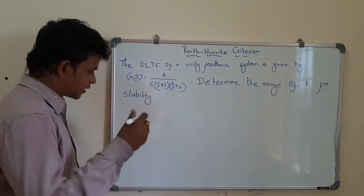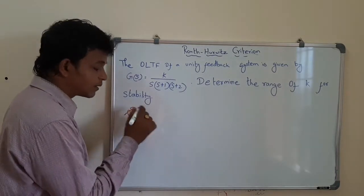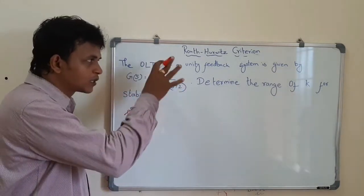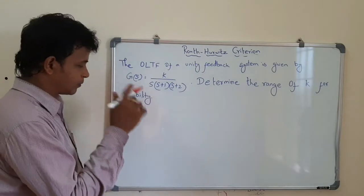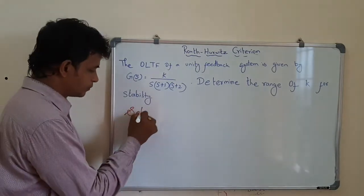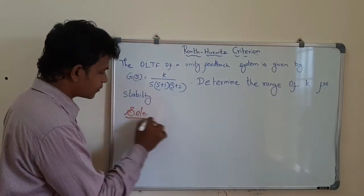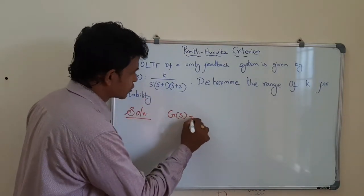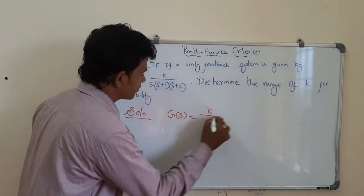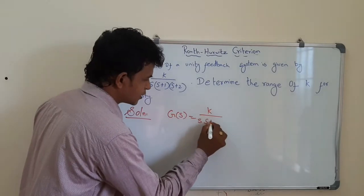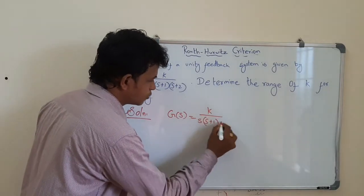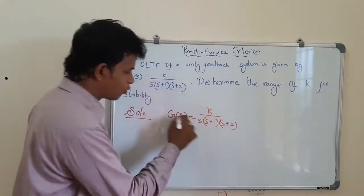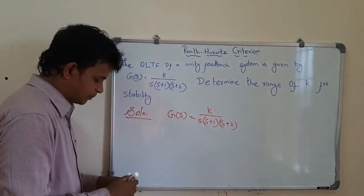We will start with the characteristic equation. We will apply the characteristic equation. So here, G(s) is equal to k divided by s into (s+1) into (s+2). This is the open loop transfer function.